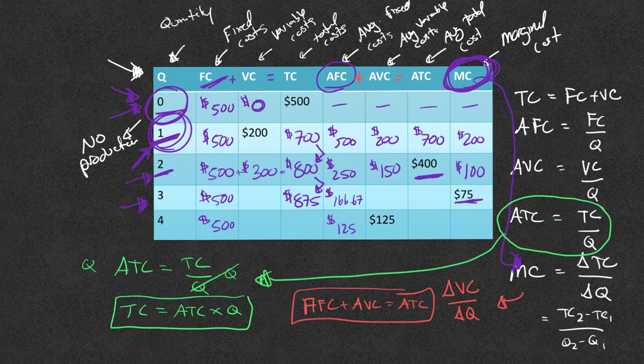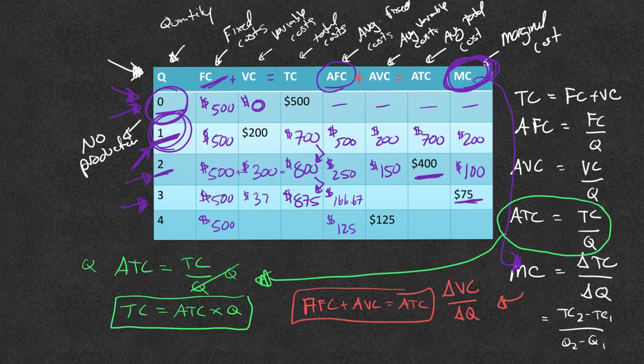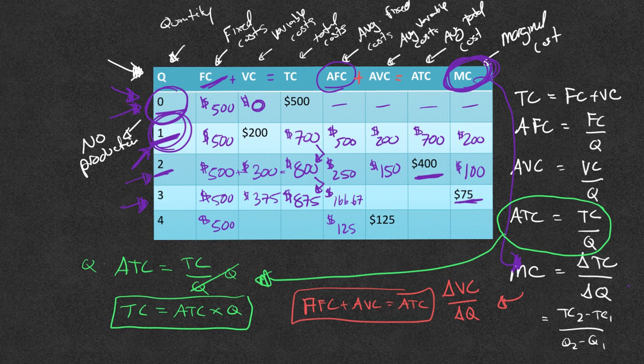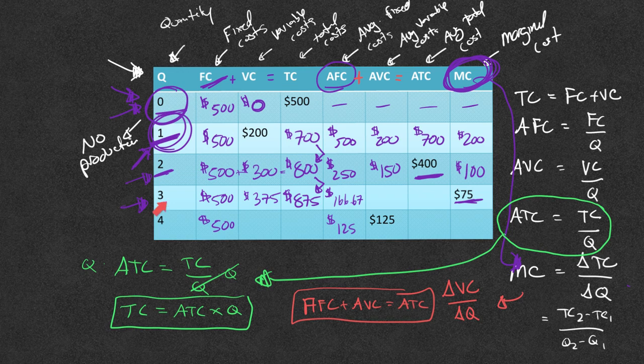If my total cost is 875, my fixed cost is 500. What must be left over? That is the $375 for the variable cost. We're just going to divide all this stuff by three. We already did the average fixed cost. We're just going to divide average variable cost and average total cost. We're going to divide the variable cost and total cost by three.